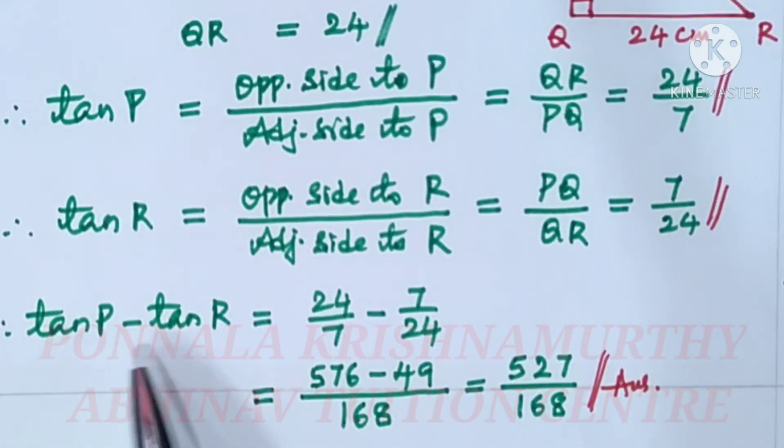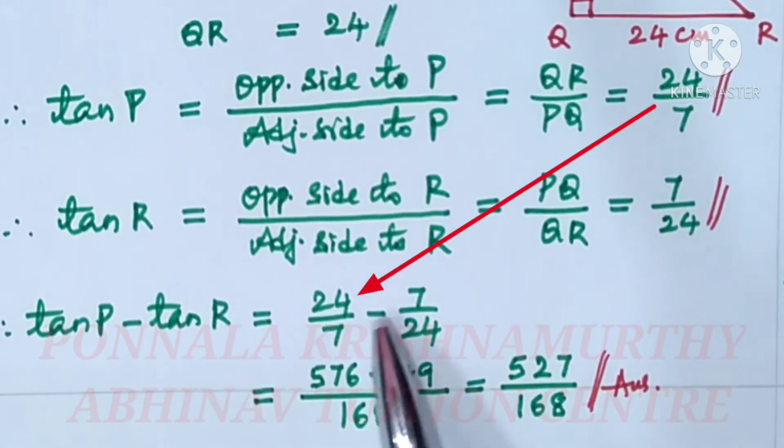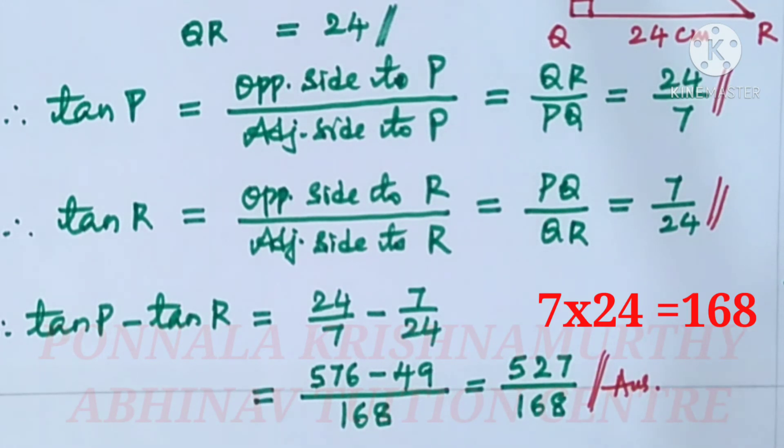We need tan P minus tan R, that is equal to 24 by 7 minus 7 by 24. LCM for 7 and 24 is 168. The product of these two is equal to 168. 168 by 7 is 24, that 24 into 24 is 576, minus 168 by 24 is 7, that 7 into 7 is 49. That is equal to 527 by 168. Answer.